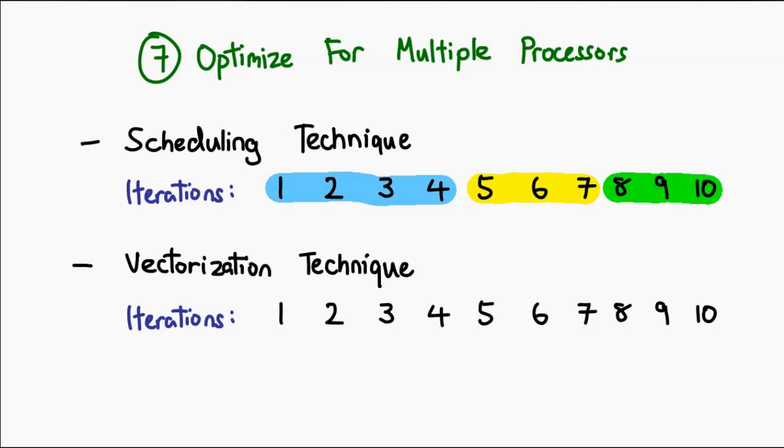Alternatively, you can simply say, iteration 1 runs on processor 1, iteration 2 runs on processor 2, and so on. And when those finish, you give all the processors the next iteration, whatever it is.